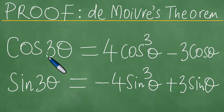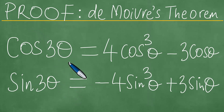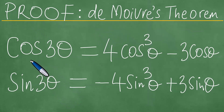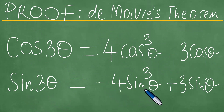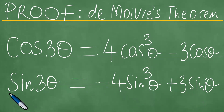We are here and we want to write down the proofs to these particular two trigonometric identities using De Moivre's theorem. We need to prove that cosine 3θ equals 4cos³θ minus 3cosθ. We also need to prove that sine 3θ equals minus 4sin³θ plus 3sinθ. And we present the proofs as follows.